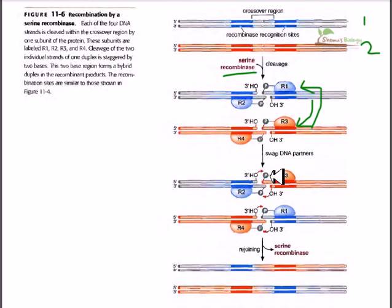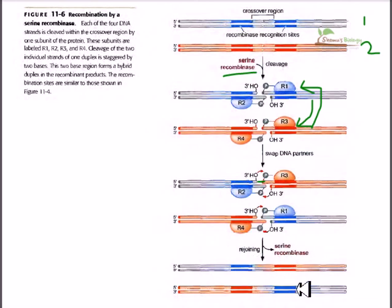Right after the DNA swap, the oxygen of the hydroxyl group attacks the phosphate, cleaves it, and then reseals the nicks. After resealing, recombinant products are formed — strands having multiple patches. The serine recombinase is responsible for all these steps.